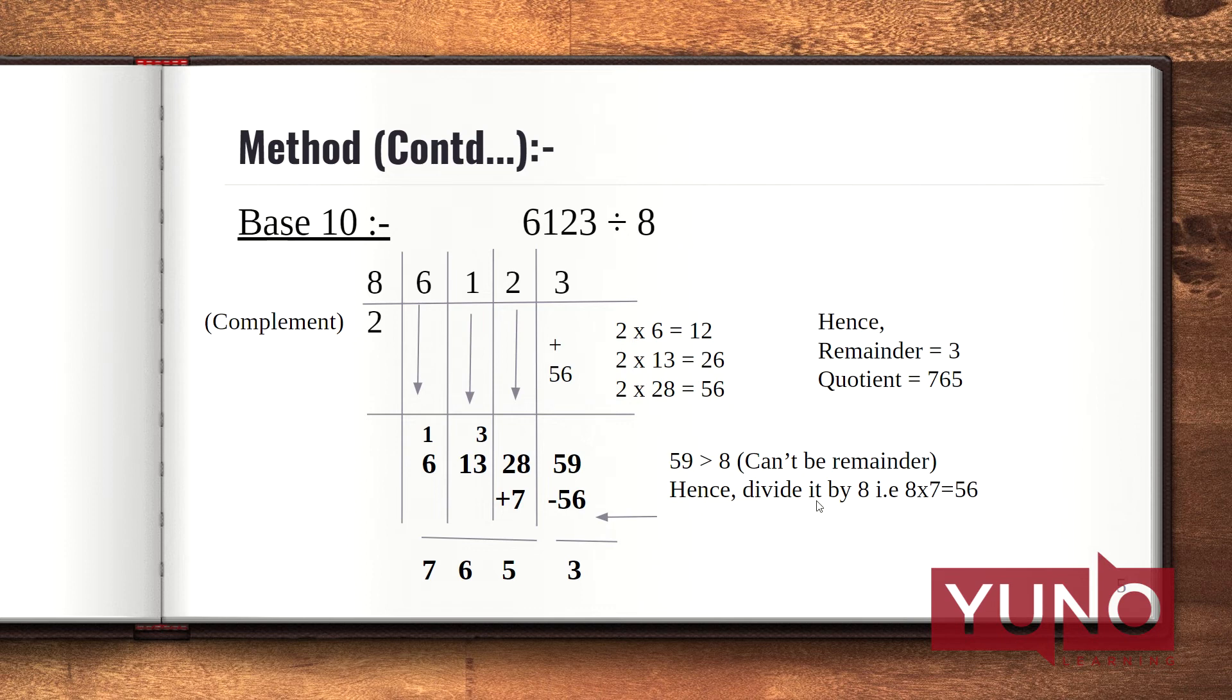Here also 59 is greater than 8 and hence cannot be the remainder. Hence, we divide it by 8. That is, 8 multiplied by 7 is 56. So I have subtracted 56 from 59, which gives me 3 as a remainder, and since it is 7, I am adding 7 with the remaining digits to form my quotient. So 28 plus 7 is 35, 13 plus 3 is 16, and 6 plus 1 is 7. Hence, my quotient is 765 and remainder is 3.